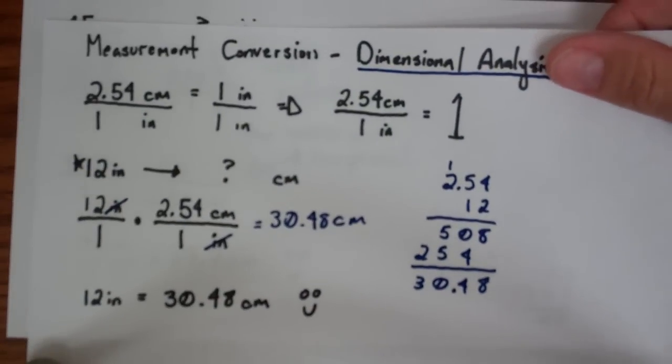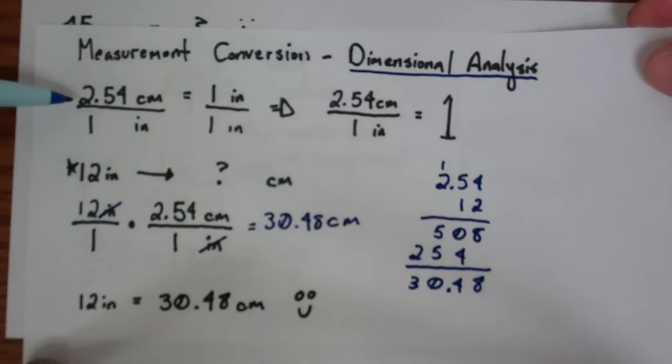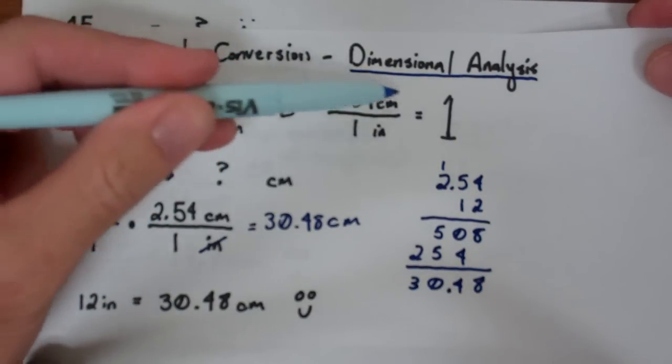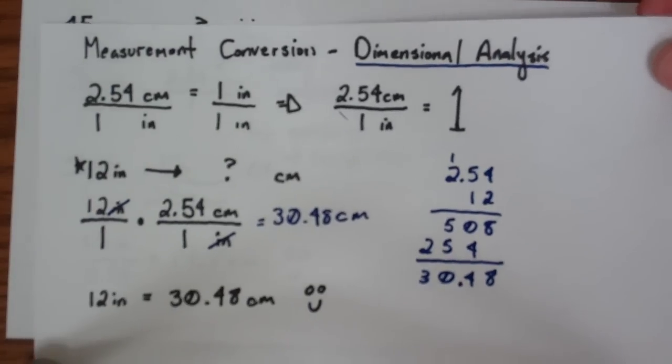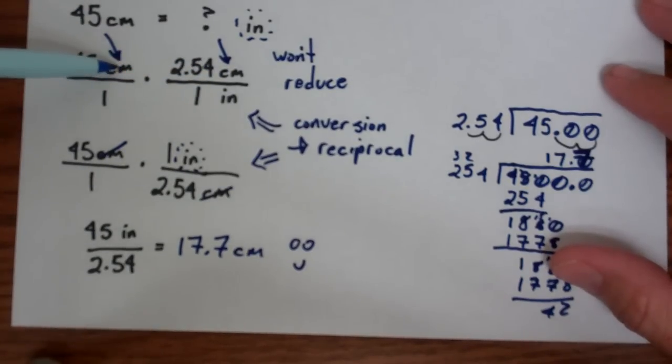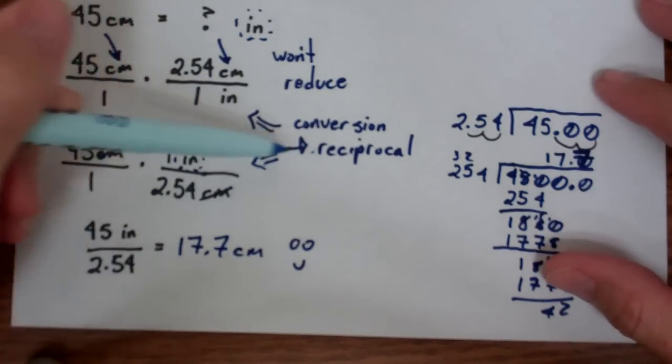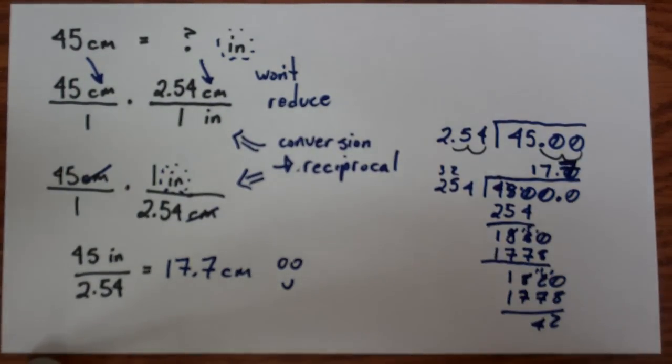This is how you do measurement conversions. Another word for it that you'll hear in your science classes is dimensional analysis. The basic idea is that you can take any conversion and by dividing one side by itself, you get a conversion fraction equal to one. Then you can use those fractions to analyze the dimensions and get the dimension you don't want to reduce out and leave you the dimension that you do want. If the conversion factor isn't in the correct spot, you can always take the reciprocal and flip it over. I hope you found this video on measurement conversion helpful and good luck.